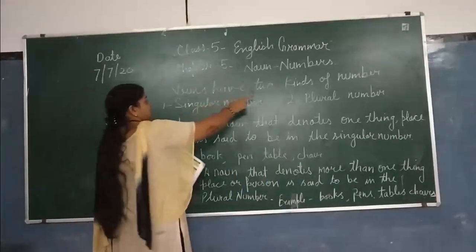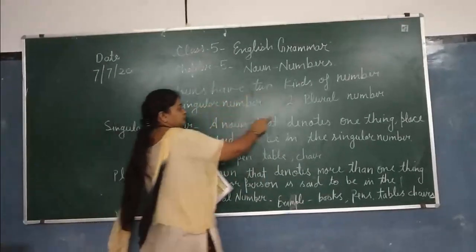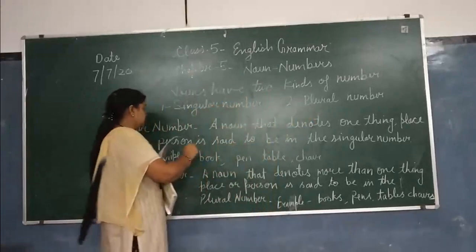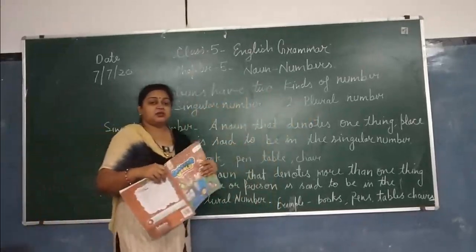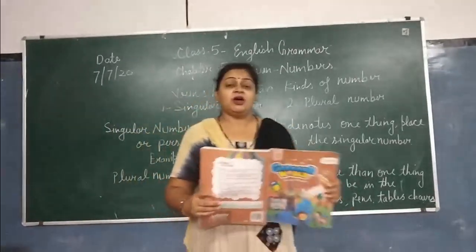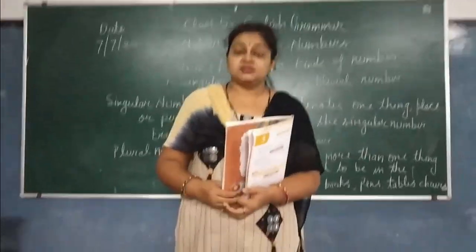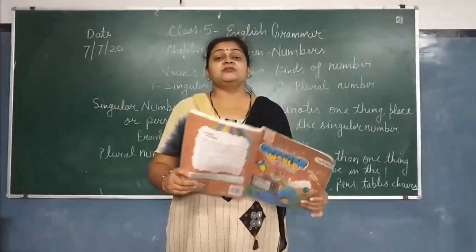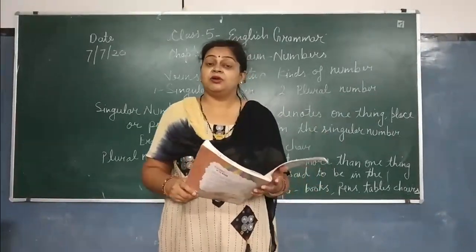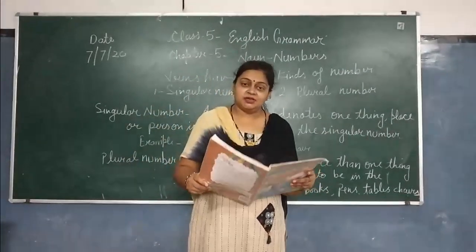Noun has two kinds of number: singular number and plural number. Students, in your earlier classes, you had learned about noun. So, what is noun? The general definition of noun is the name of a person, place, or thing.